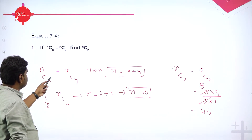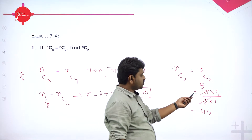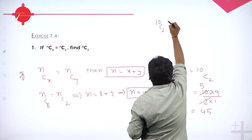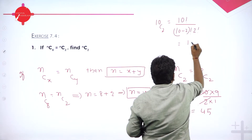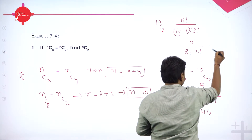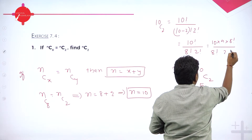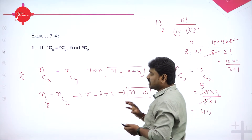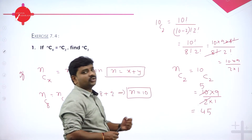So, nCx equals nCy then n becomes x plus y. nC8 equals nC2 gives n as 8 plus 2 equals 10. They want 10C2. That is 10 factorial divided by 8 factorial into 2 factorial, giving 10 into 9 divided by 2 factorial. The shortcut: start from 10, take two terms, expand numerator and denominator — you get 45.